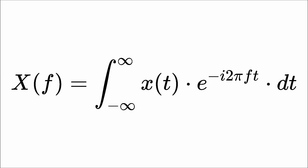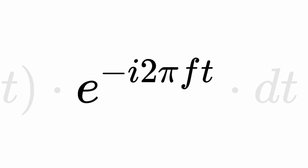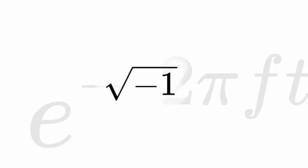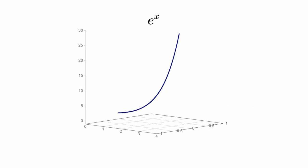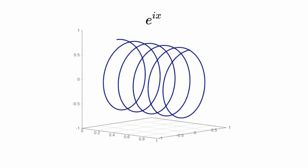This is the Fourier transform. This is the complex exponential. And this is the square root of minus one, otherwise known as i. This is what the exponential function looks like without the i, and this is what it looks like with the i. A complex exponential is a spiral.